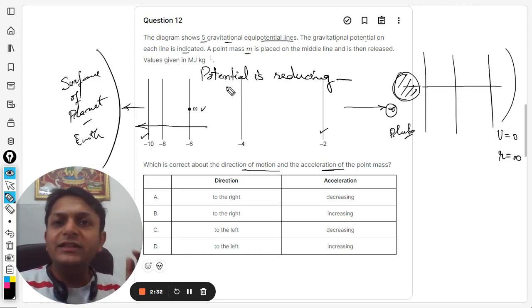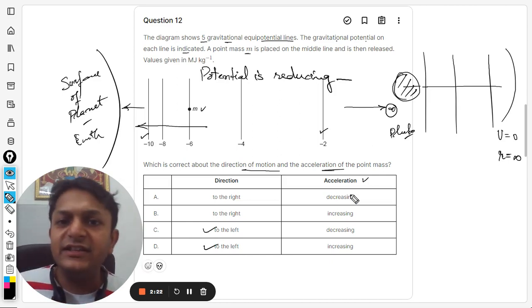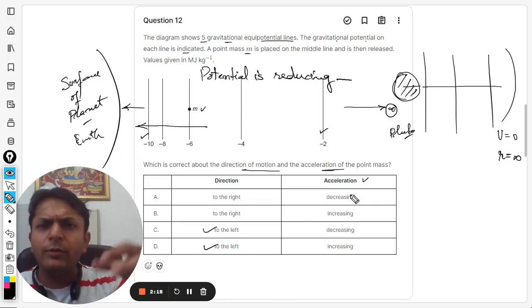So it would be moving in the direction in which the potential is reducing—that is, towards left. So C and D will be right. And we have to see what is happening in the case of acceleration now. Obviously, this is a clear-cut case of dropping a ball. The ball is dropped and is moving towards the surface of the Earth.